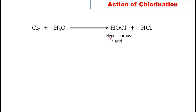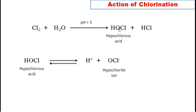HOCl is called hypochlorous acid. This reaction happens only when the pH value is greater than 5. If pH is less than 5, this reaction will not happen. The HOCl again dissociates depending on temperature and pH value — it becomes H⁺ ion and OCl⁻ ion (hypochlorite ion). This is a reversible process based on pH value: at certain pH, HOCl splits into H⁺ and OCl⁻, and at favorable pH they associate back to HOCl.